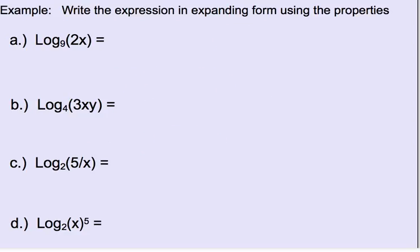We want to write this expression in expanded form. This first logarithm has 2 times x inside. To expand it into separate logarithms, we use the product property: logarithm base 9 of 2 plus logarithm base 9 of x — separating it into two separate logarithms.